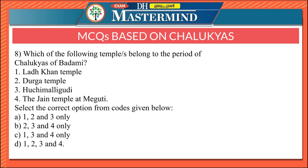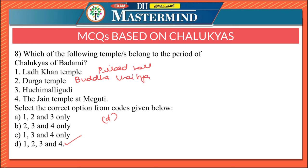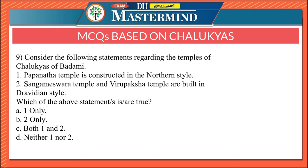The eighth question: which of the following temples belong to the period of the Chalukyas of Badami — Larkhan temple, Durga temple, Huchimalligudi, and the Jain temple at Meguti? All four temples belong to the Chalukyas of Badami, so the answer is Option D. Among the seventy temples founded at Aihole, four are very important: Larkhan temple, a low flat-roofed structure with a pillared hall; Durga temple, which resembles a Buddhist Chaitya; Huchimalligudi; and the Jain temple at Meguti.